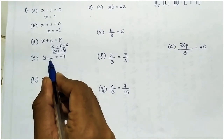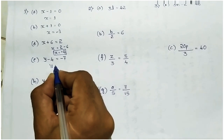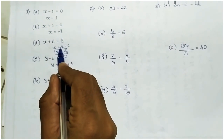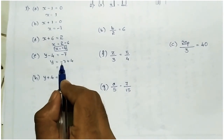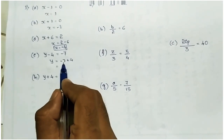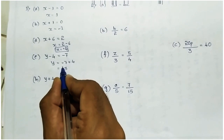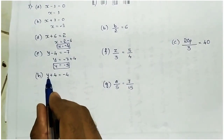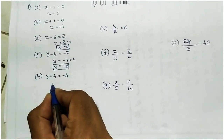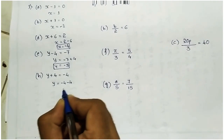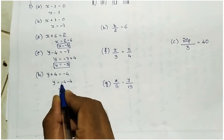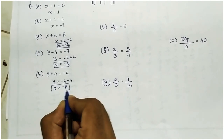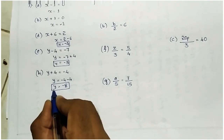Next, y minus 4 equal to minus 7. If you take minus 4 to the right side it becomes plus, so y equal to minus 7 plus 4. Both have opposite signs, so subtract the smaller from the bigger: 7 minus 4 is 3, and put the bigger sign which is minus, so y equal to minus 3. In h: y plus 4 equal to minus 4. Take plus 4 to the right side, it becomes minus 4 minus 4. Both signs are the same, so add them and keep the same sign: y equal to minus 8.